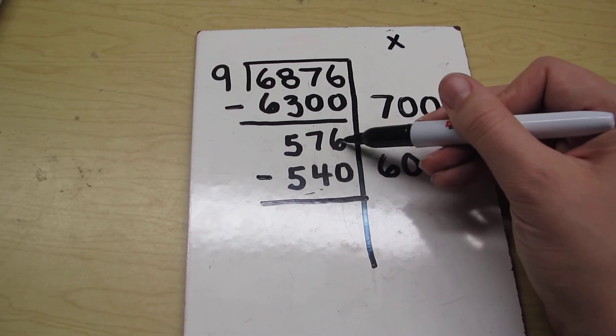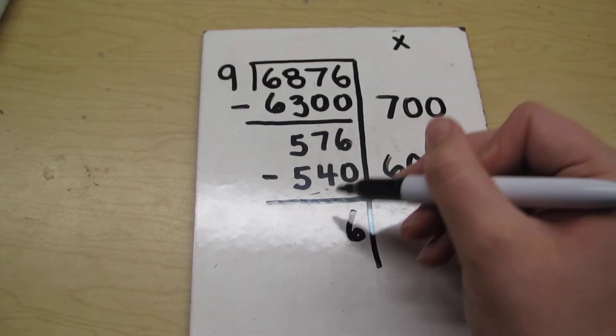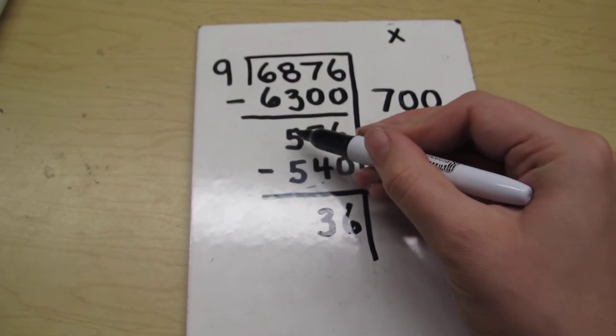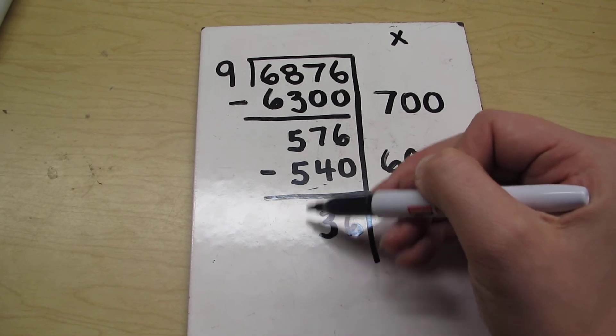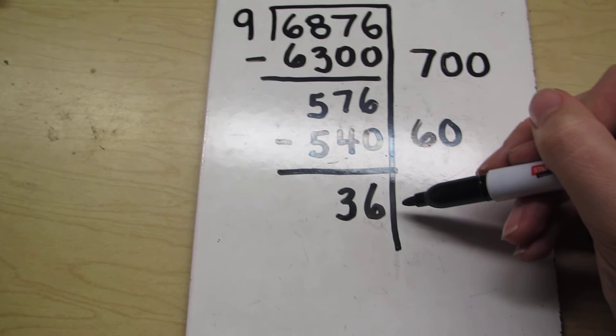I'm going to do my subtraction again. 6 minus 0 is 6. 7 minus 4 is 3. And 5 minus 5 is 0. Again, I won't put anything there. So I'm left to work with 36.